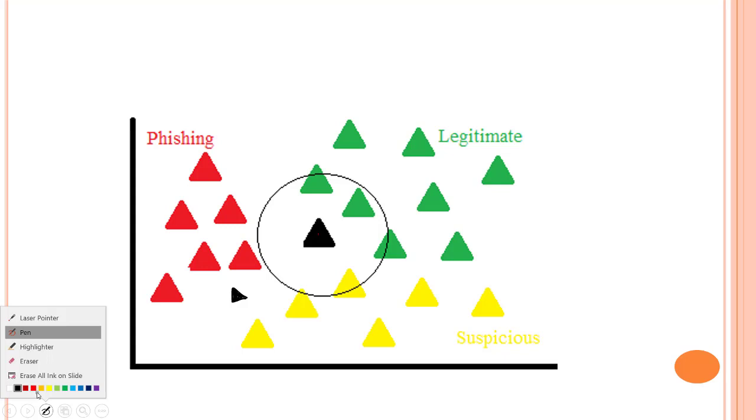Then again, where should it belong? The 5 points that it is near to is this, this, this, this, and this. We can say that a number of yellow triangles are more, so this new black point belongs to the red category. It is phishing, it is not a legitimate link. You should just ignore this link and move to the next link.